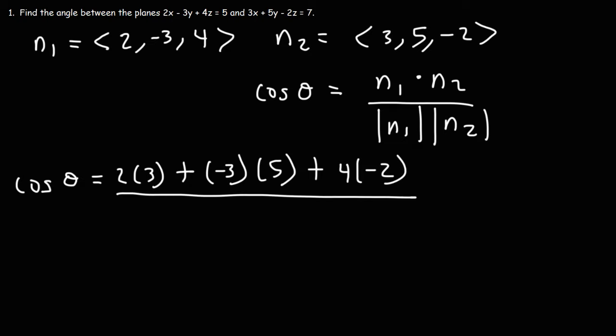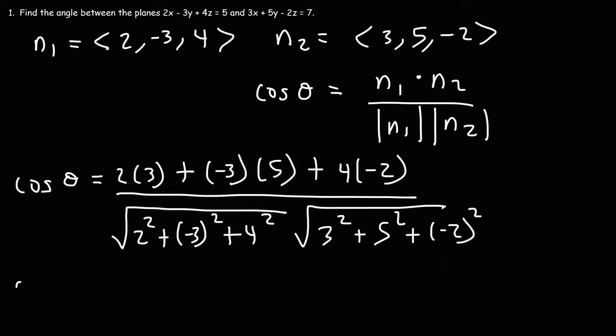Now the next thing we need to do is divide it by the magnitude of the two vectors. So the magnitude for N1 is going to be the sum of the squares of these values. So it's going to be 2 squared plus negative 3 squared plus 4 squared. Now for the second normal vector, we're going to follow the same process. So we're going to have 3 squared plus 5 squared plus negative 2 squared, all within the square root symbol.